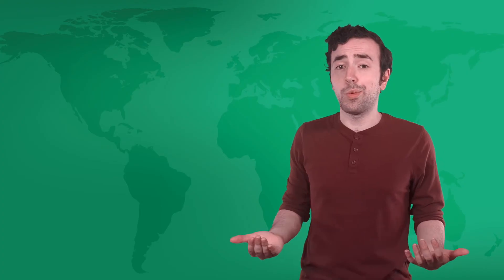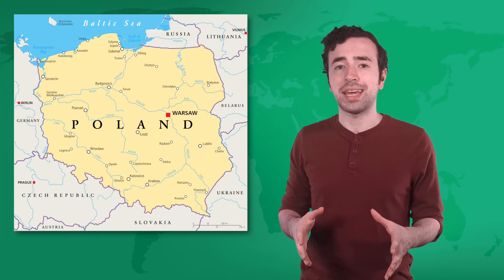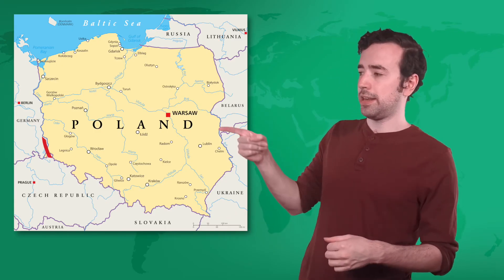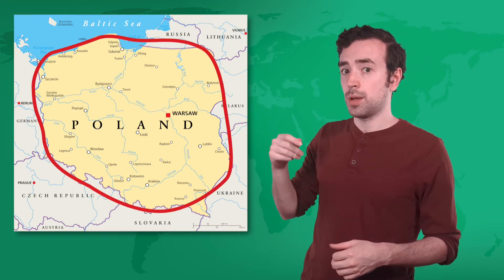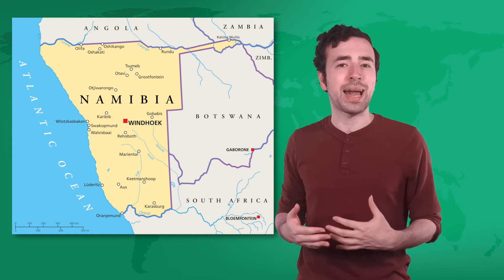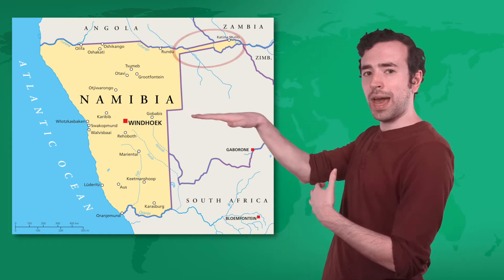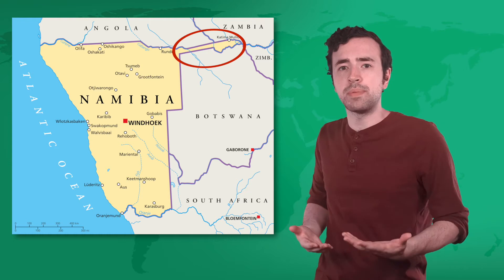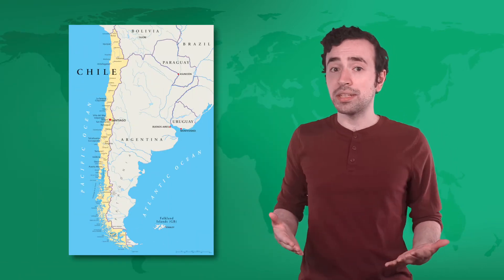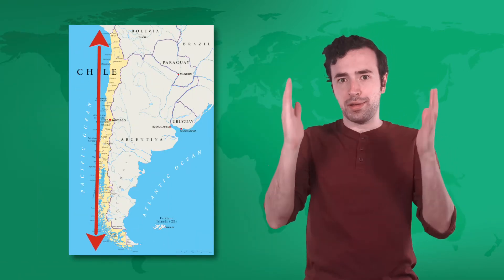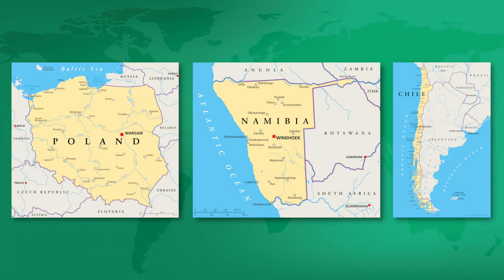Let's look closer at each shape. Compact states like Poland are kind of shaped like circles. Prorupted states are mostly compact but they have a tail that extends out, like Namibia. Elongated states are long and narrow, like Chile. Here's a hint: one is easy to defend and the others offer more resources — can you guess which is which?